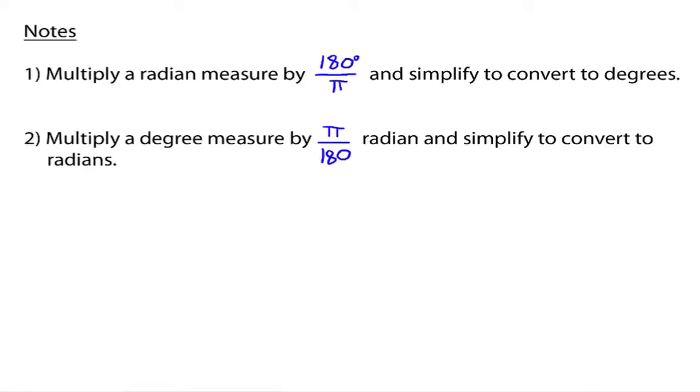So the following note: Multiply any radian measure by 180 degrees over π and then simplify that, and that will convert it into degrees. Also, we could multiply any degree measure by π over 180 radians and then simplify that, and that will convert it to radians.